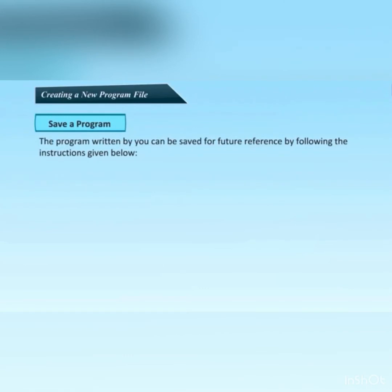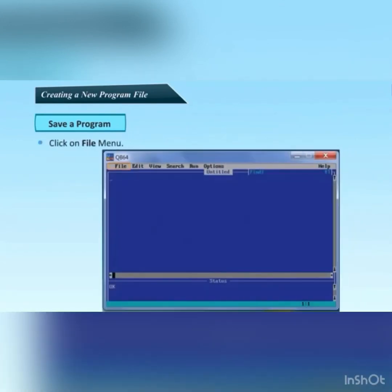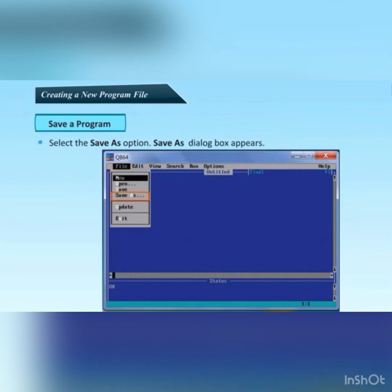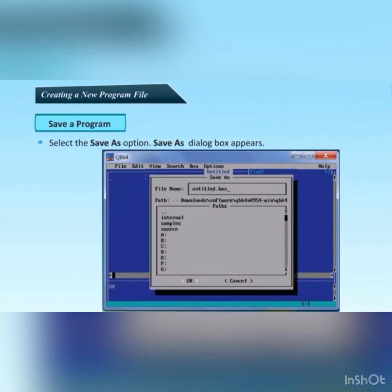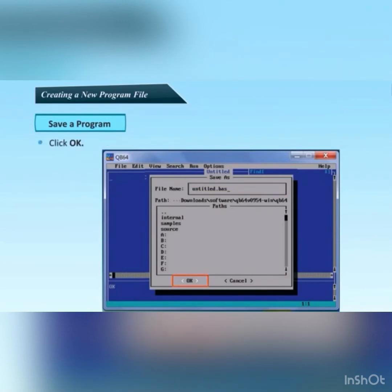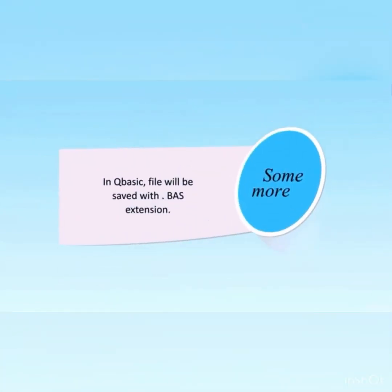The program you write can be saved for future reference by following these steps: click on the file menu, then select the save as option. A save as dialog box will appear. Type the file name and click OK. Your file will be saved with the extension .BAS, which is the extension for QBASIC files.